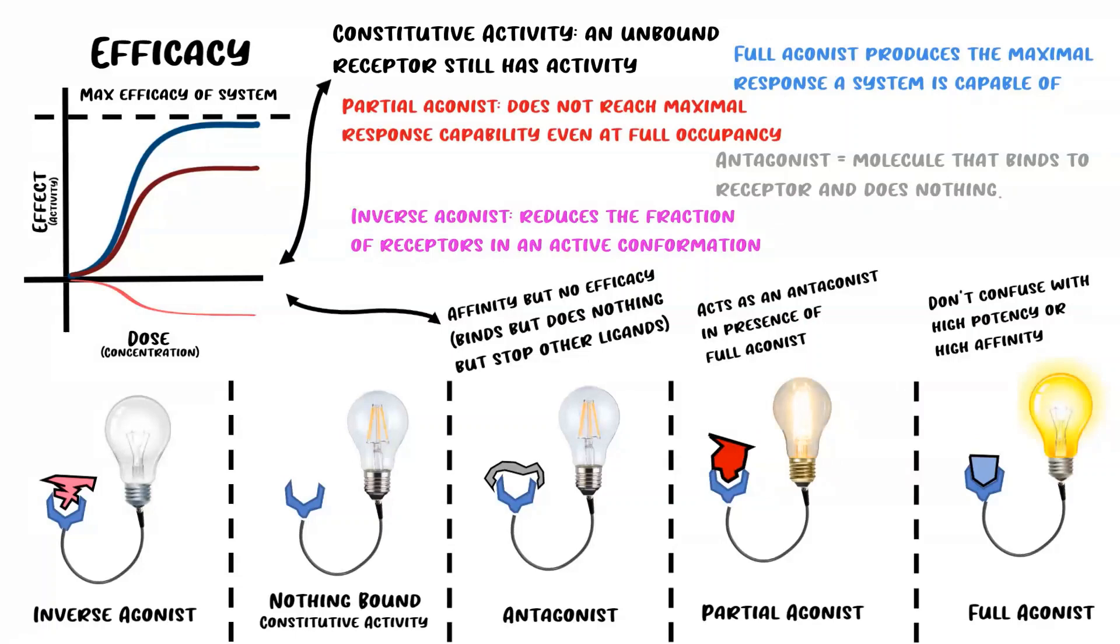Next, we see the constitutive activity, which we define as zero on this curve. The zero on this curve is the same as the antagonist curve because the constitutive activity is the minimum activity that occurs when nothing's bound, and the antagonist makes it so that nothing else can be bound. Last, we have the inverse agonist, which is red on the curve, and we see that its effect is even lower than zero, which we define as the constitutive activity, because it removes the activity that occurs when nothing's bound.